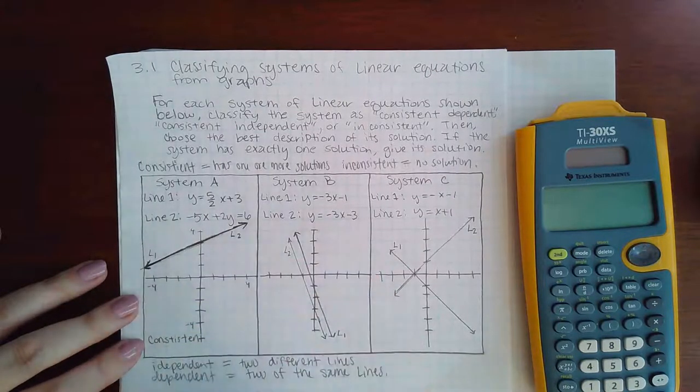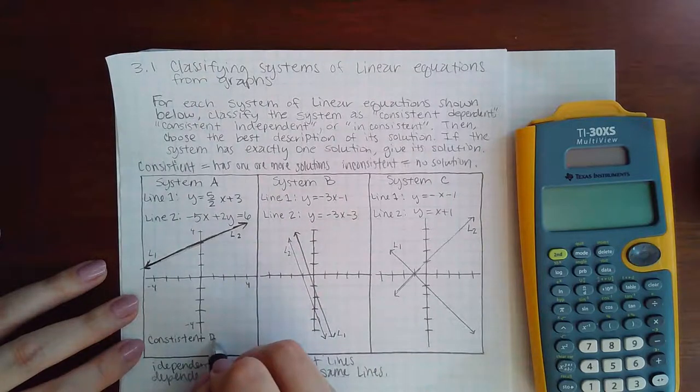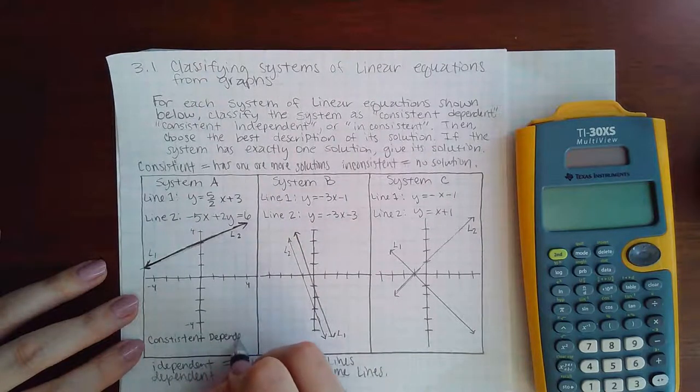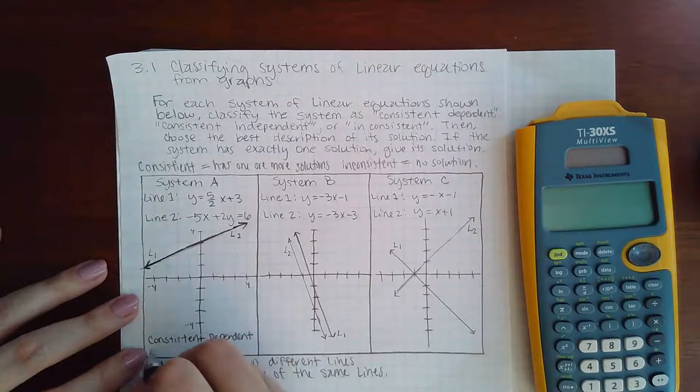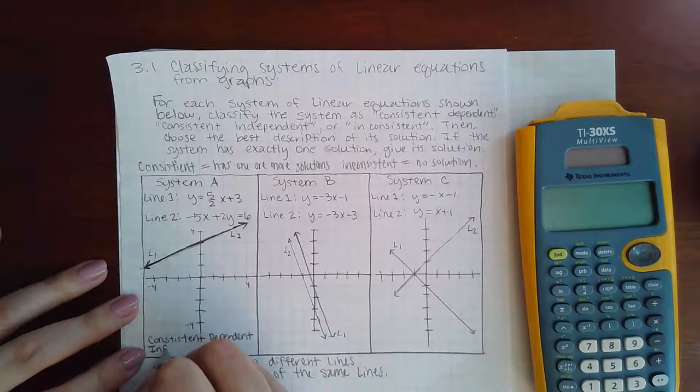Because there are solutions, but it is dependent because those are not two different graphs—they're the same graph. And then what are the solutions? Well, here there's infinitely many solutions.